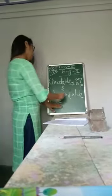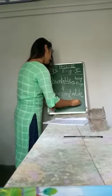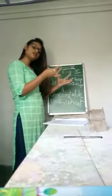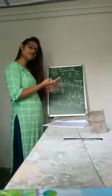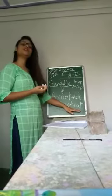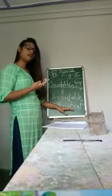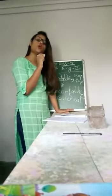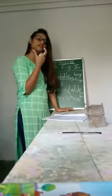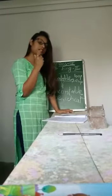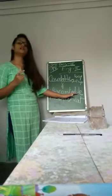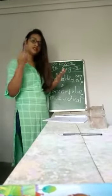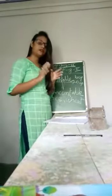Then we have wheat. Wheat also we can't count one by one — we count it together as a group, in kilograms. That's why wheat is also an uncountable noun. Then oil: oil we can't count one by one because oil is liquid. We count it in liters. So noun meaning name, countable means counting, uncountable means not counting.